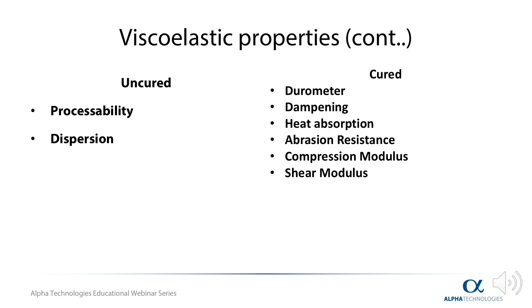For example, a high G prime, or a high elastic modulus, in a cured material, will relate to a high durometer and stiffness in the final product.